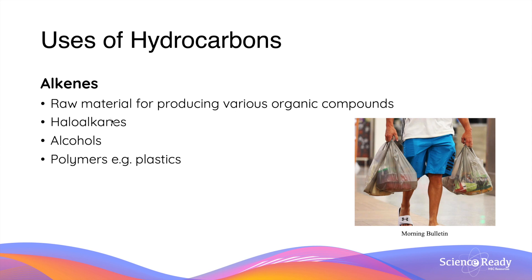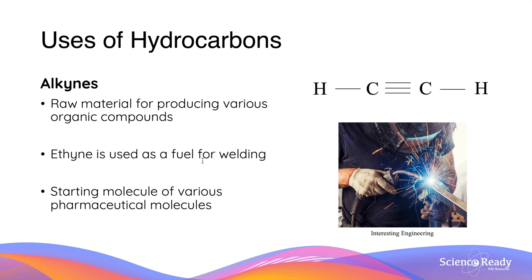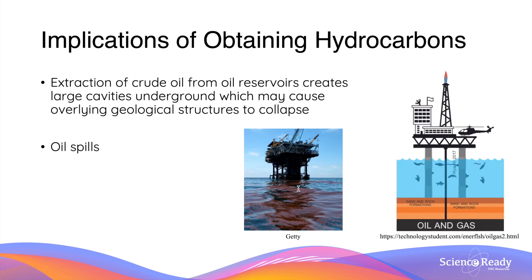Unlike alkanes, alkenes are more commonly used as starting materials to produce other organic compounds due to their greater chemical reactivity. Throughout this module, you will learn about some of these compounds and the reactions involved, including haloalkanes, alcohols, and polymers such as plastics. Uses of alkynes are very similar to alkenes as they are also chemically reactive and used as starting materials for synthesis of other compounds, in particular pharmaceutical molecules. In addition, the alkyne ethyne is also used as a fuel for welding.